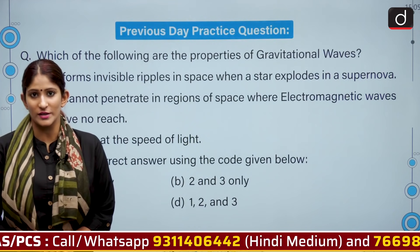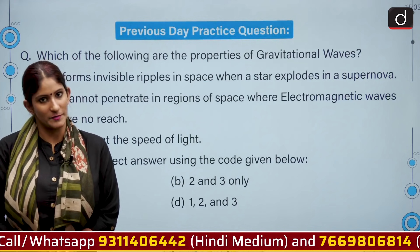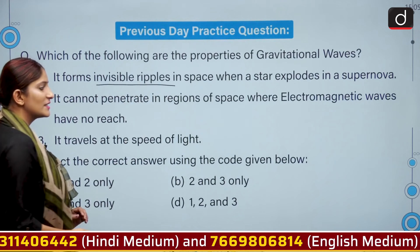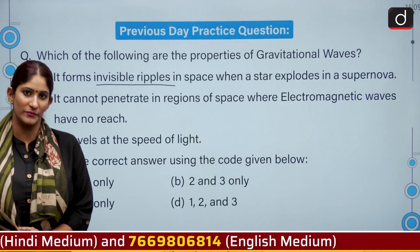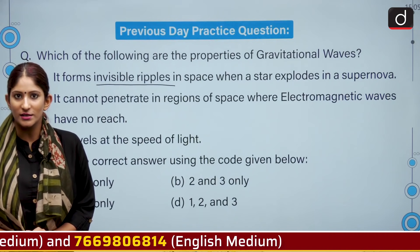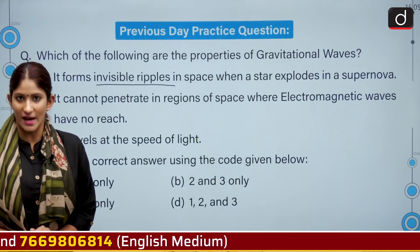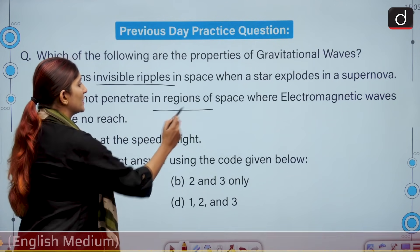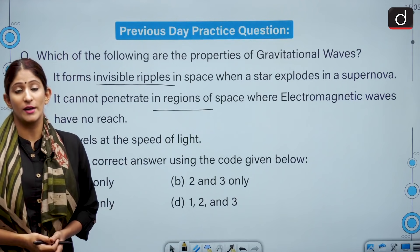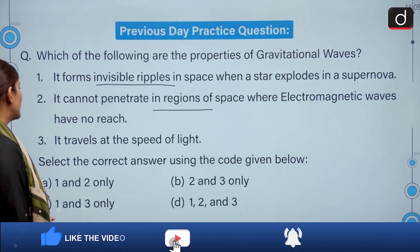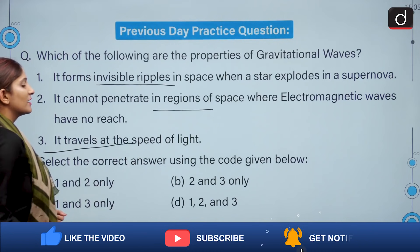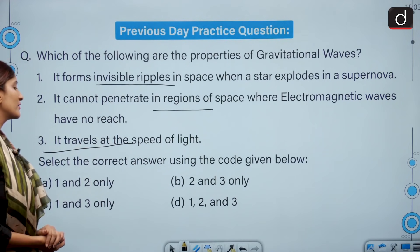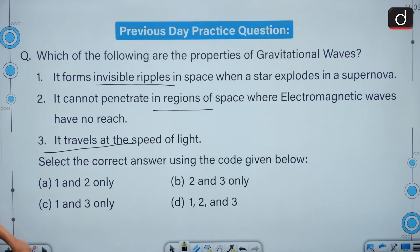As we have to choose the correct statement: the first statement is correct — it forms invisible ripples in space when a star explodes in a supernova. The second statement is incorrect because gravitational waves can penetrate into regions of space where electromagnetic waves do not exist. The third statement is correct. So the correct answer would be option C: one and three only.